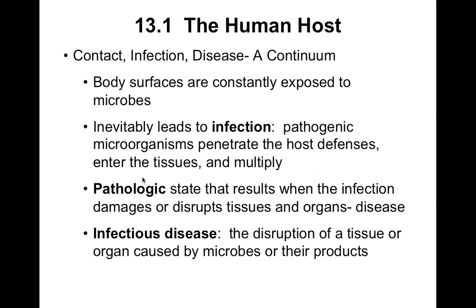The first thing we need to talk about is the human host. Generally, an infection is seen in three different parts: contact — coming in contact with the pathogen; infection — the pathogen breaking through our protective mechanisms, getting inside our body and setting up shop; and then disease, where you have a persistent infection that has pretty much taken over. It's a continuum of sorts, not an all-or-nothing process. You can have contact and infection almost simultaneously, depending on where the pathogen is infecting or how big a wound you have.